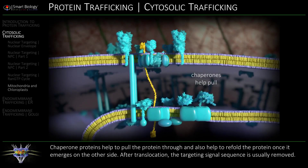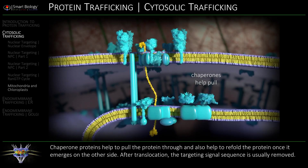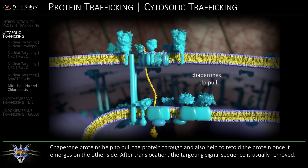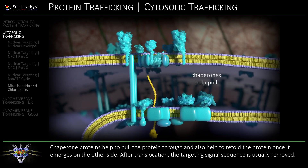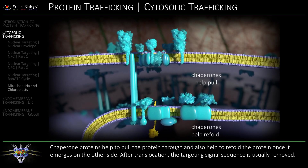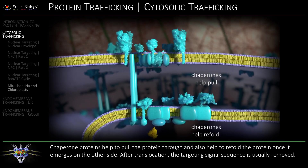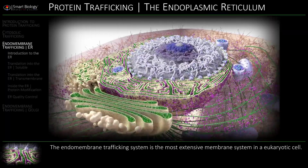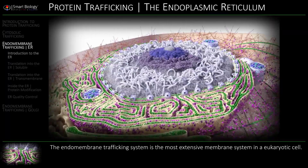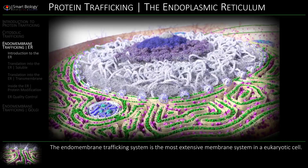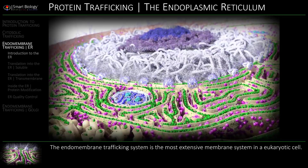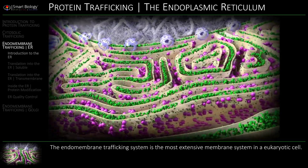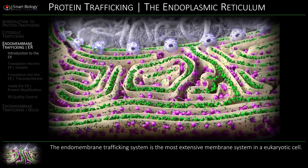Chaperone proteins help to pull the protein through and also help to refold the protein once it emerges on the other side. The endomembrane trafficking system is the most extensive membrane system in a eukaryotic cell.